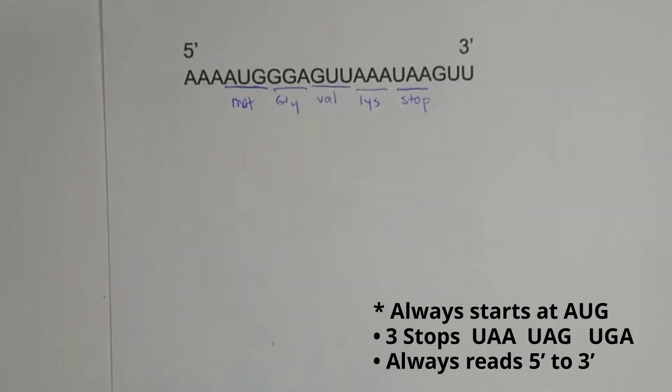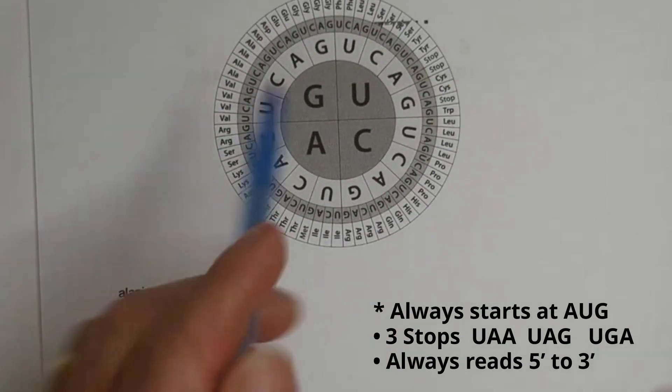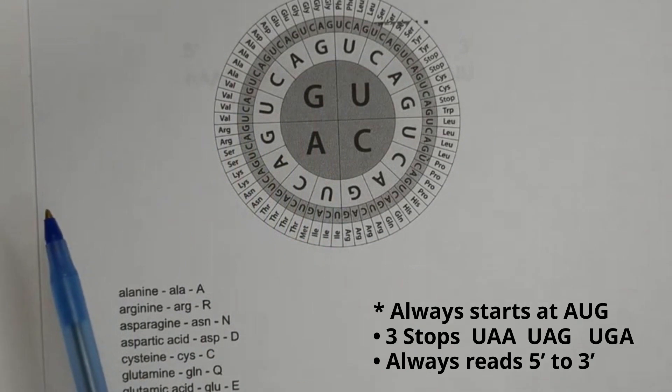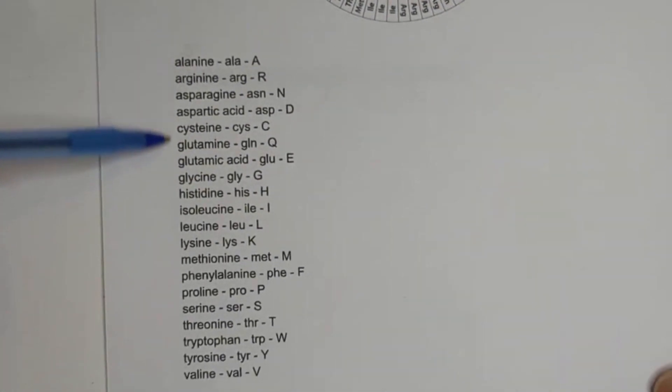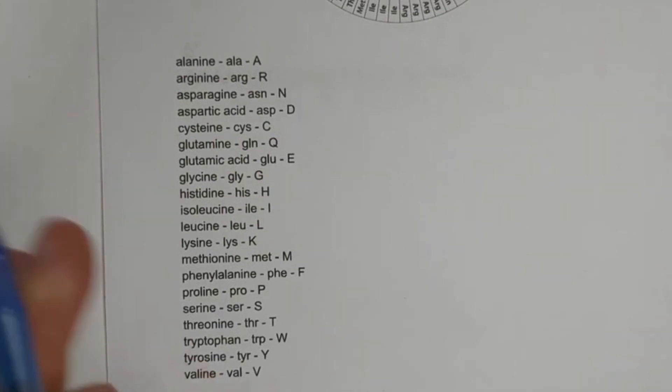We have GUU, and again, I go to this chart, GUU, and I get VAL, then I go down here, and I see VAL is for valine. Okay, so please forgive me if I kind of mispronounce amino acids a little bit. I don't do this a ton.